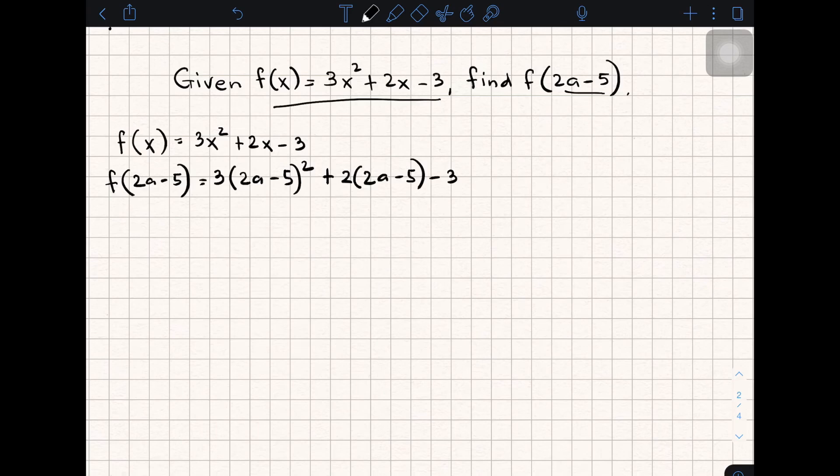In this kind of given problem, it will take a while for us to solve this one because there are so many operations, and the main problem here is the exponent and the parentheses. We need to eliminate them. So in this part, if we expand this square of binomial, we have (2a - 5)².